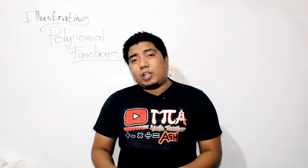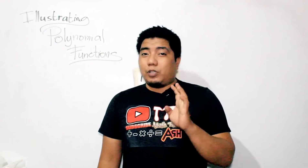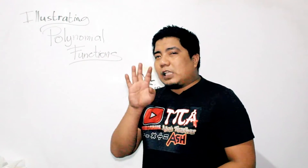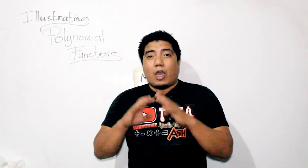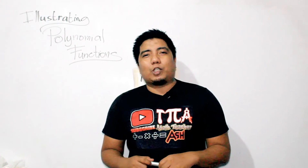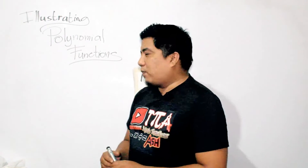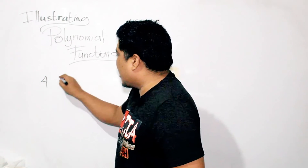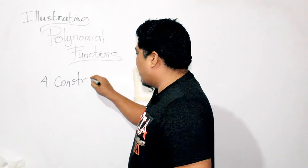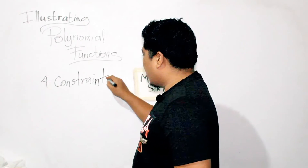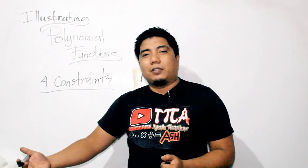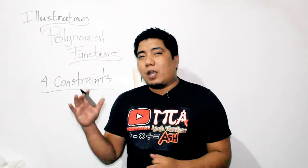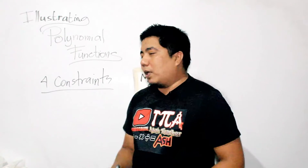Now, when can we say that a given expression is a polynomial? There are four things you need to consider. These four things — if ever you see this in a given expression, then that given expression is not a polynomial. These are known as the four constraints or four violations. If any of these is present in a given expression, then that is not a polynomial.